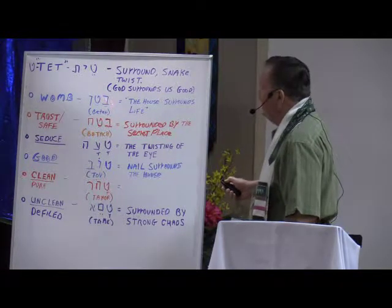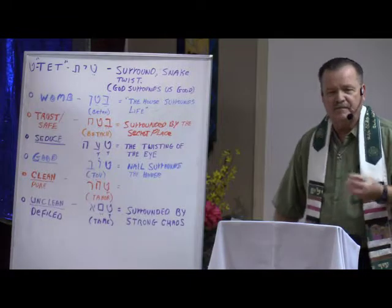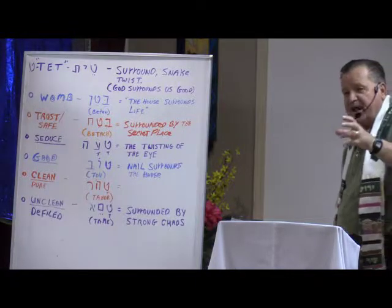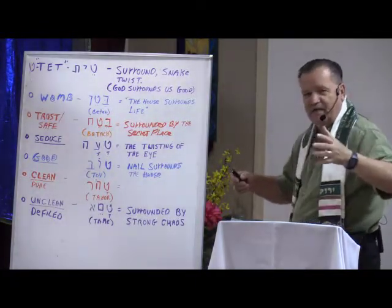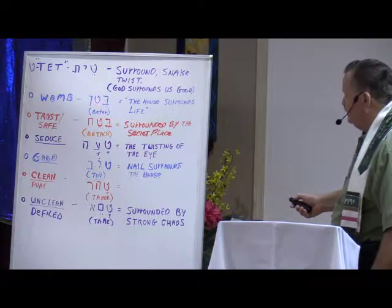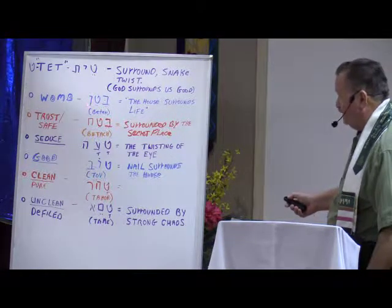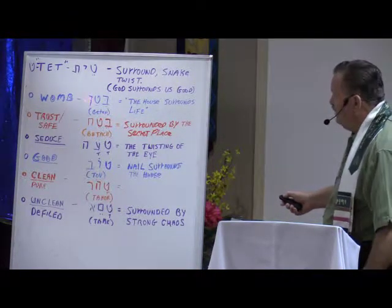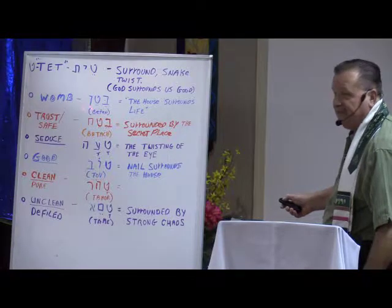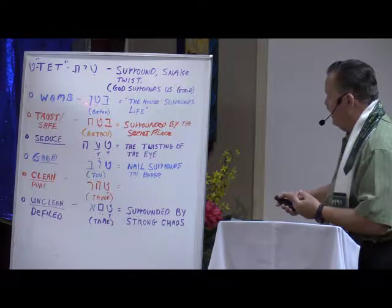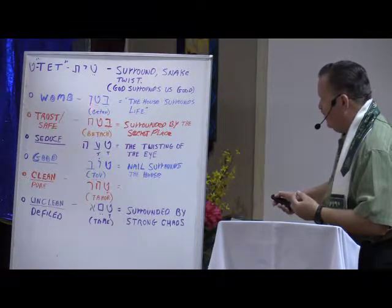You notice it has a dot here — we call that a dagesh. When it has a dot, it makes the B sound as in boy. When the dot is not there, it makes the V sound as in victory. So bet has the potential for two different sounds: B as in boy, or V as in victory. If it has the dot it makes the B sound. Then we have the tet. And the letter at the end is the nun sofit ending. Normally if this letter is not at the end, it would have another piece coming down. This is the nun. At the end of a word, that drops down and makes a longer leg.